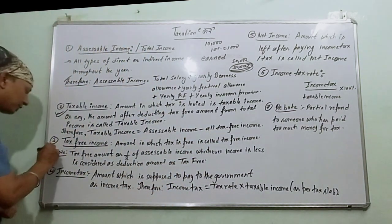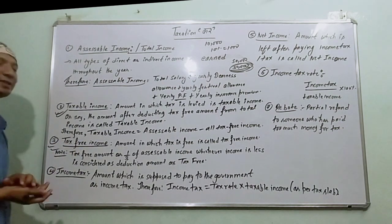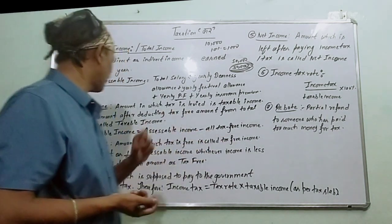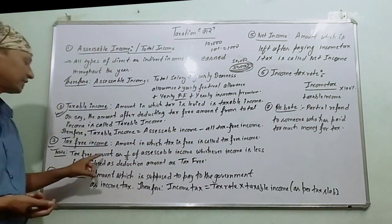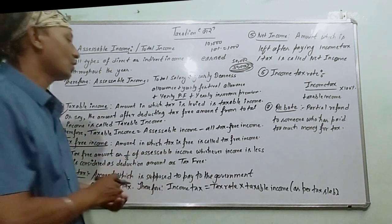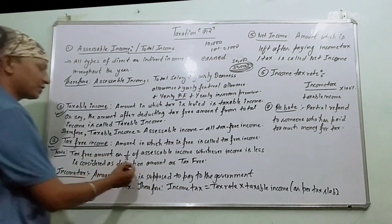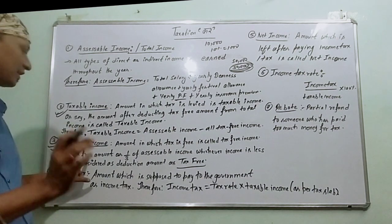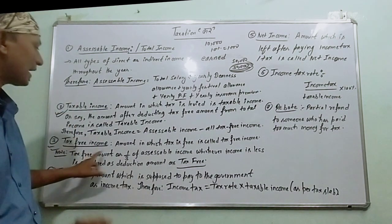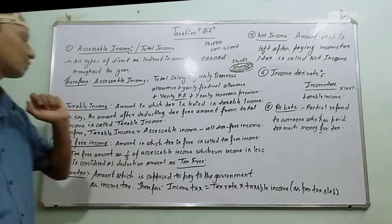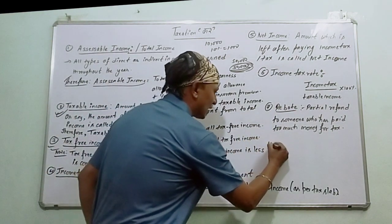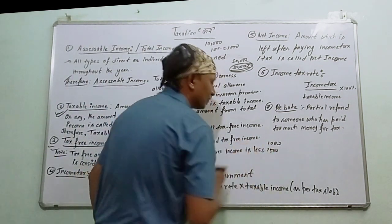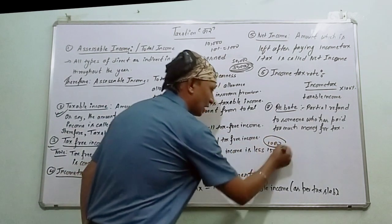Number 3 is Tax-Free Income. Tax-free income is the amount on which tax is free. Note: the tax-free amount is either the total of your tax-free investments or one-third of accessible income, whichever is less, and that is considered as the deduction amount. So if you have tax-free income, you use whichever of the two values is smaller — for example, if tax-free income is $1,000 and one-third of accessible income is also $1,000.